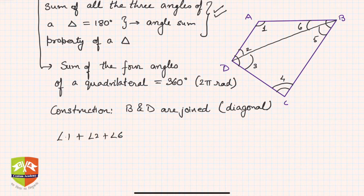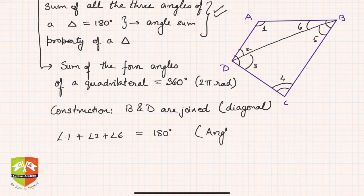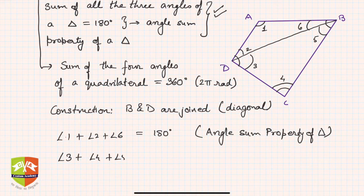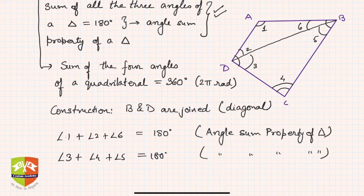We can say angle 1 plus angle 2 plus angle 6 equals 180 degrees — this is because of the angle sum property of a triangle. Similarly, angle 3 plus angle 4 plus angle 5 also equals 180 degrees, by the same property. Let these be equation one and equation two.